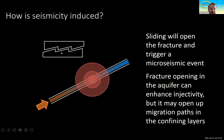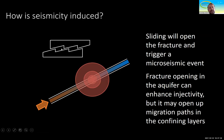Due to the roughness of the fractures, the fracture aperture increases, which enhances permeability. This microseismicity is beneficial if it occurs within the storage formation, because we are going to have enhanced injectivity.